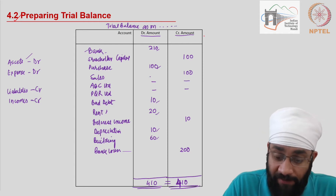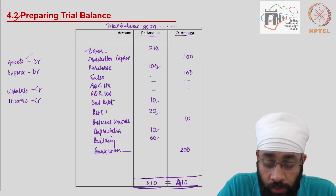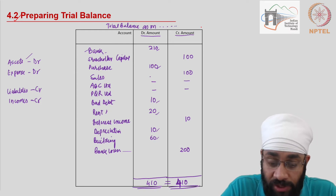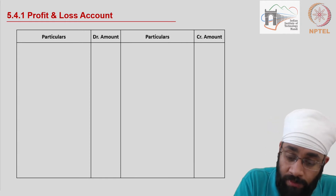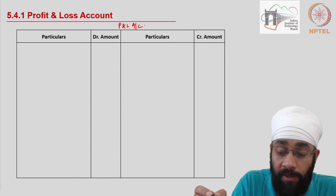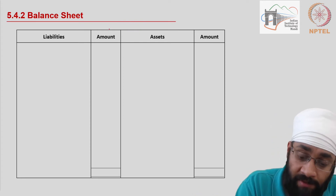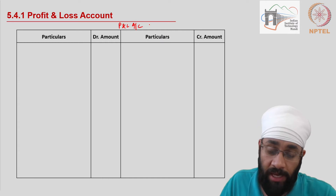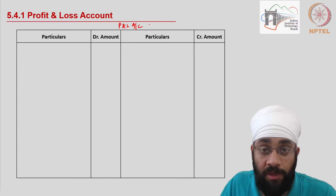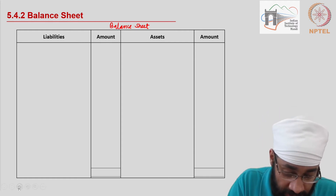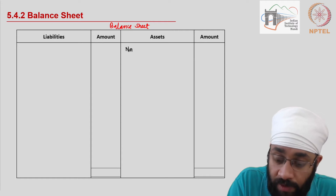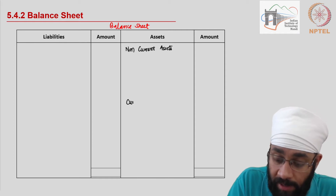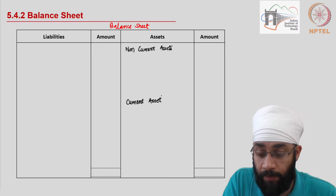We have debit balances and credit balances here. All we are going to do is pick these and place them into the two statements: income statement and balance sheet. I also have a profit and loss account format in the slide deck, and on the next slide the format of the balance sheet. On the asset side we have to first write the non-current assets, followed by current assets - this is how it is supposed to be presented.